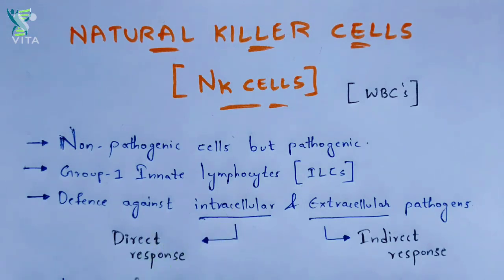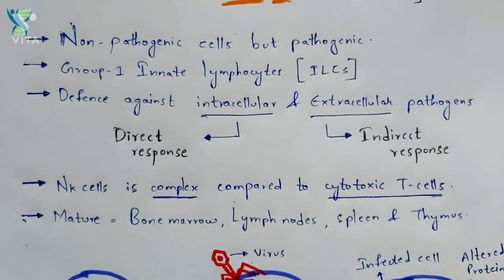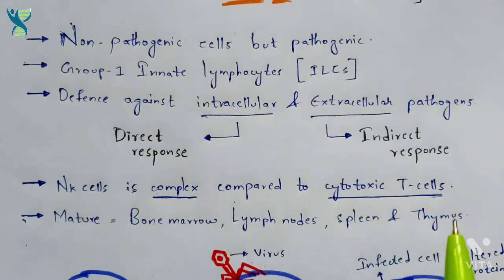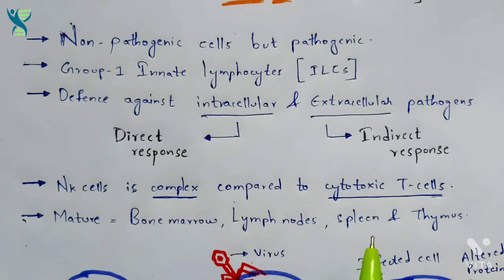NK cells are more complex compared to cytotoxic T cells. Cytotoxic T cells are also called killer T cells because they help kill cancer cells. Cytotoxic T cells release certain chemical factors called cytotoxic T cell receptors, which help bind to a specific antigen causing damage to the body. The immune system is protected because we have certain receptors and cells to counter this.